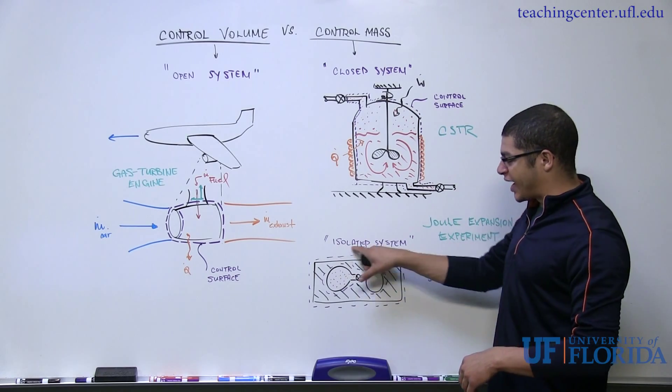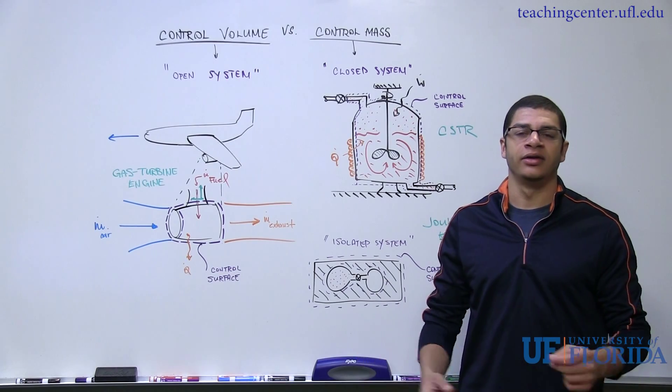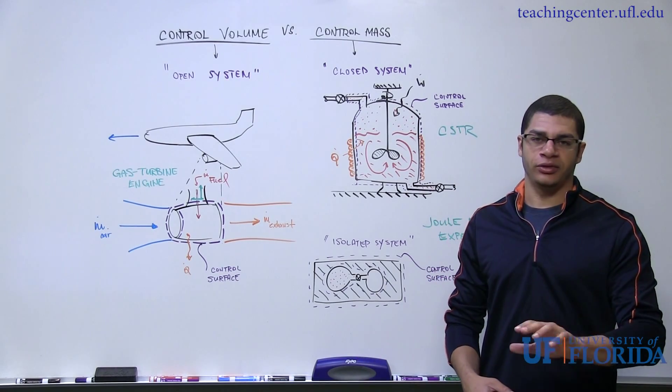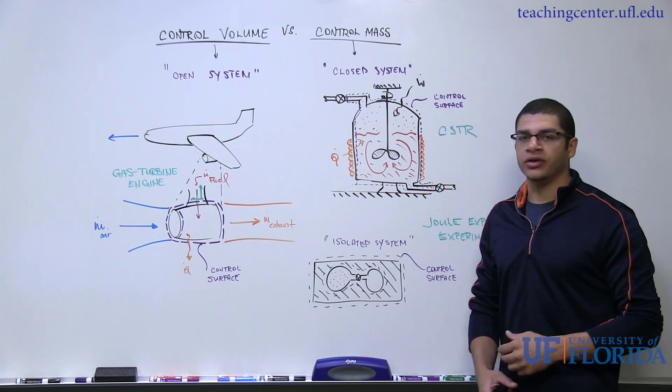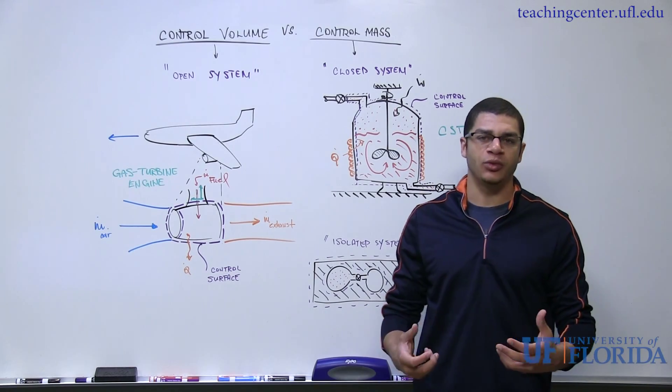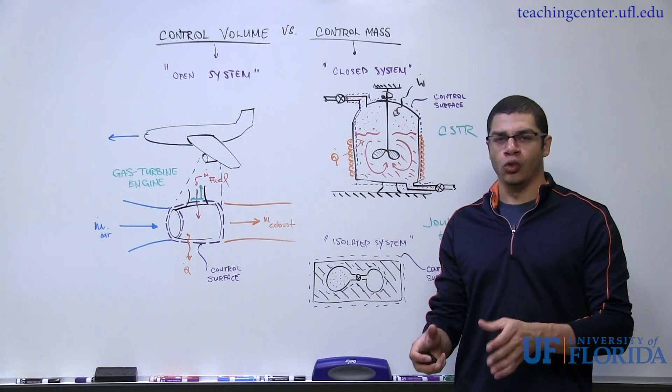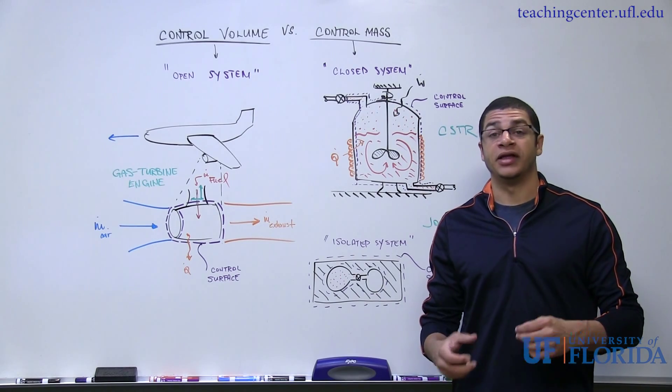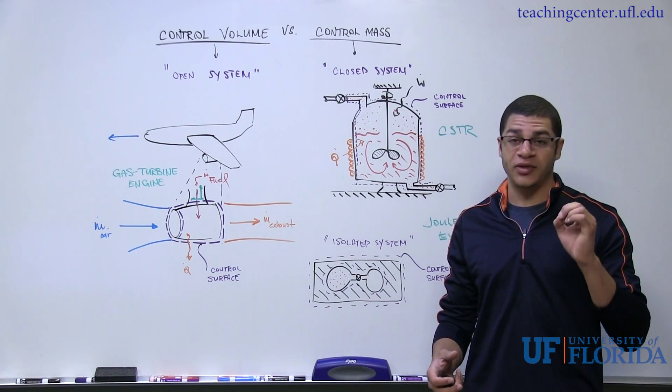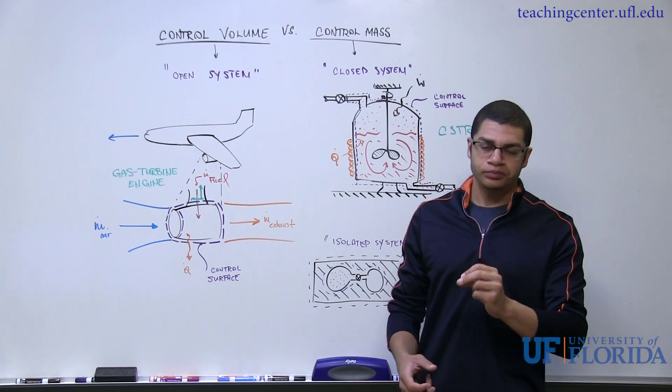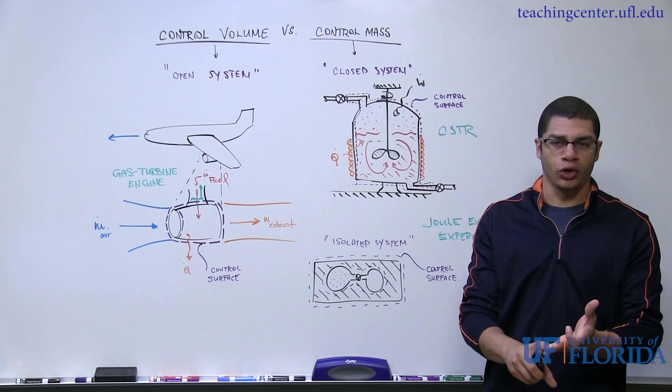But a further constraint for an isolated system is that in addition to no mass transfer of any kind, there is no energy transfer at all. And what we'll learn in the next few videos is that in thermodynamics, we deal with two types of energy transfer, heat and work. And for an isolated system, it's completely isolated from its surroundings. So there are no interactions in terms of either heat or work. So three total constraints. No mass transfer, no heat transfer, no work transfer.